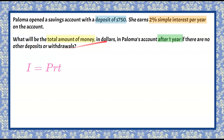We're going to use the simple interest formula because we're told it's simple interest, meaning it's a one-time interest payment — it doesn't happen every month, it's just one time at the end of your loan. So we want to find the interest first, and then we'll find the total amount of money.